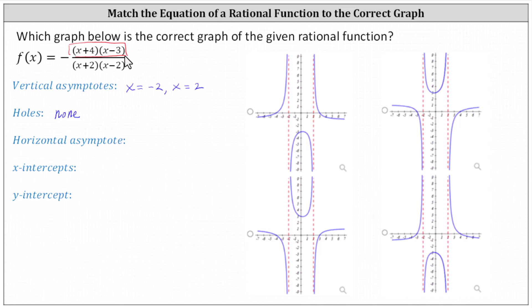X plus four equals zero when x equals negative four, which means negative four comma zero is an x-intercept. And x minus three equals zero when x equals three, which indicates three comma zero is another x-intercept.